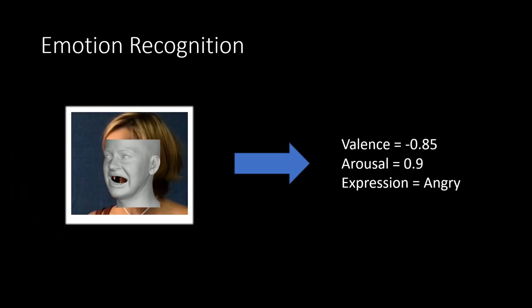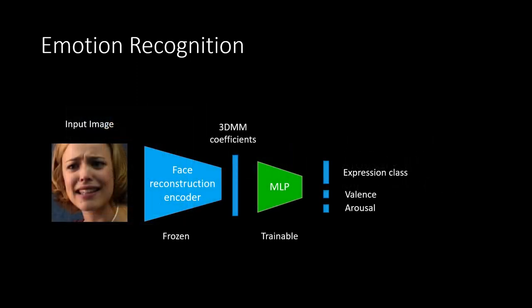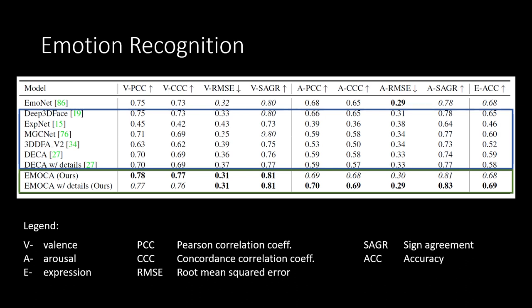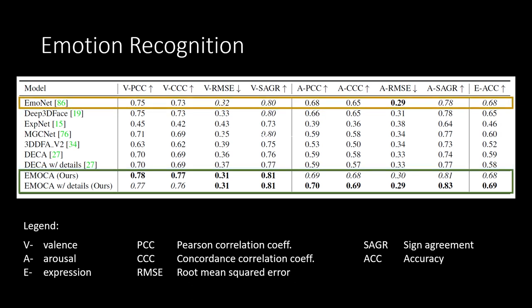We introduce a new way of evaluating the emotional fidelity of face reconstruction methods by predicting emotion directly from the inferred shape parameters. We train a multi-layer perceptron to map the predicted 3D morphable model parameters to valence, arousal, and expression in a supervised setting. EMOKA significantly outperforms prior face reconstruction methods and also gives state-of-the-art emotion recognition performance compared to purely image-based methods. This highlights the potential of using 3D information for emotion analysis.